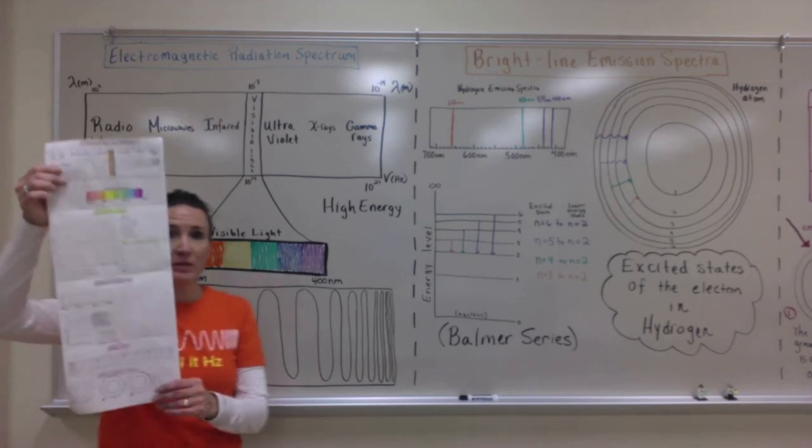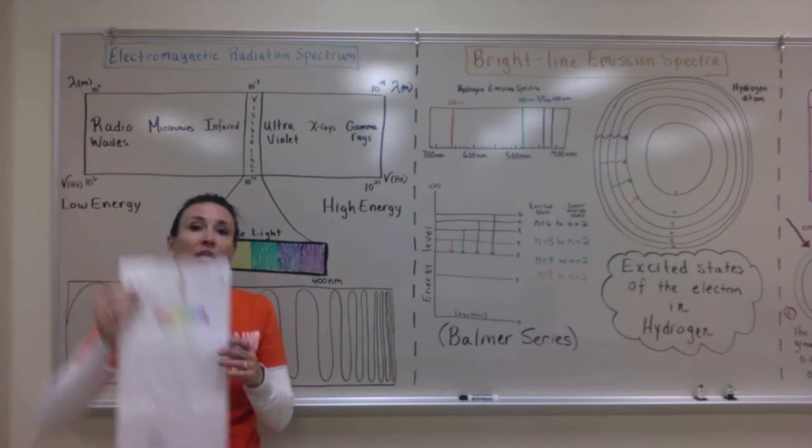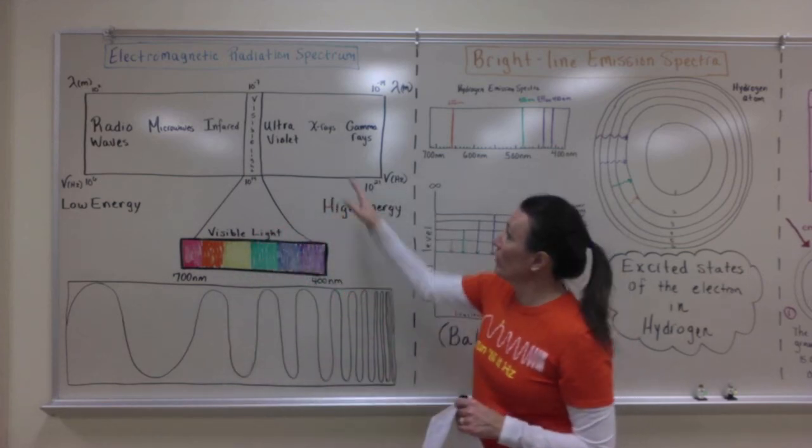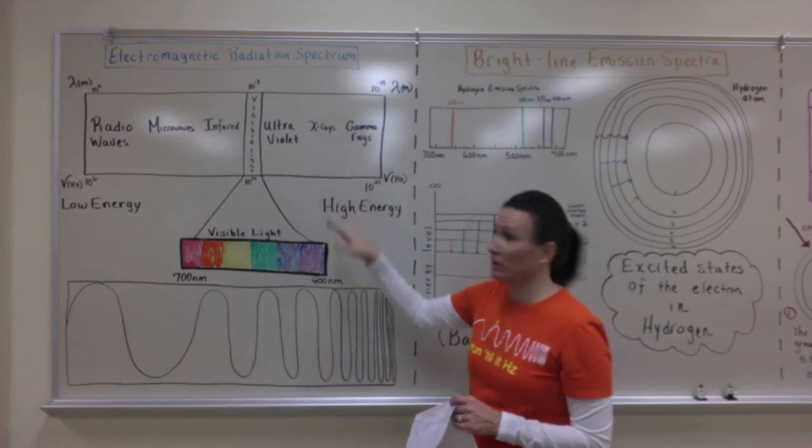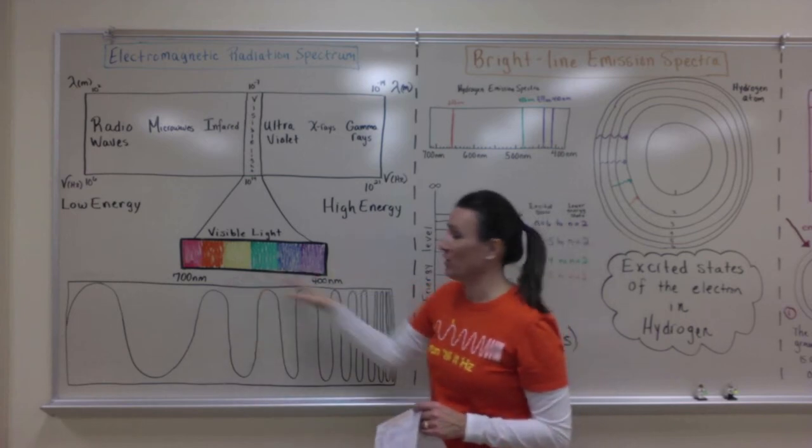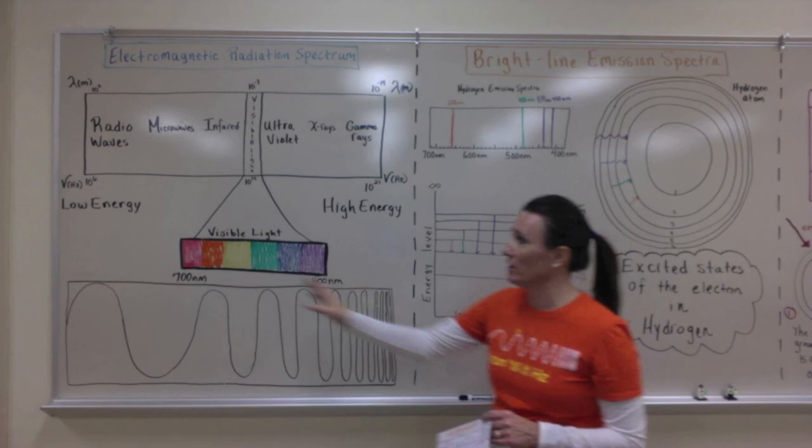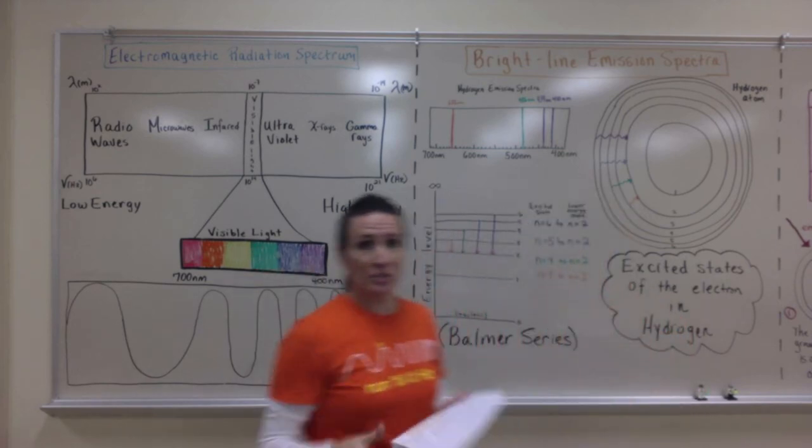While you have your foldable completely open, you'll have four sections. The top section will be the electromagnetic radiation spectrum with all the different types of radiation, the visible light spectrum and the nanometers it has, and an approximate wave difference between low energy and high energy.